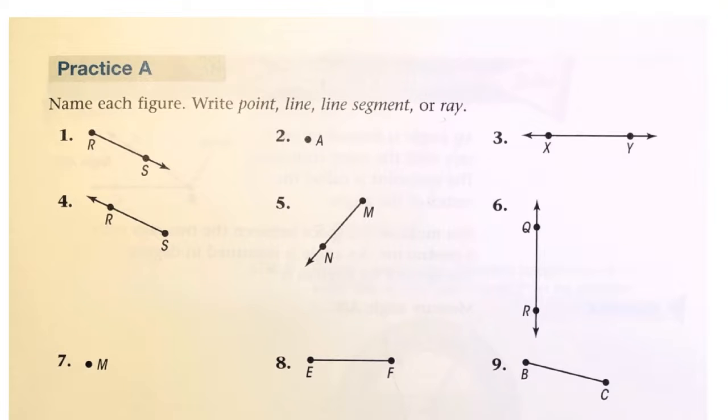Let's name each figure. Write point, line, line segment, or ray. Here we have a ray. And it's ray RS because the endpoint is R.